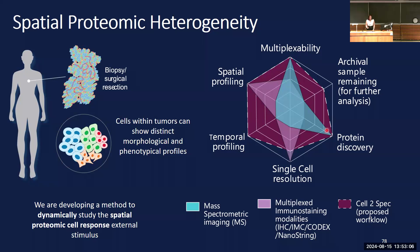Currently two methods exist for proteomic analysis but they have drawbacks. The first, mass spectrometry, vaporizes the cells and only works on fixed cells, so you can't study how interactions change over time. The second, immunohistochemistry, stains cells through antibody conjugation, but you need to know what you're looking for. Our proposed method, Cell2Spec, overcomes these challenges and will enable a dynamic study of the spatial proteomic cell response to external stimuli. We use a microfluidic probe for small-scale sample collection with mass spectrometric analysis downstream.